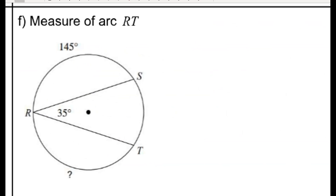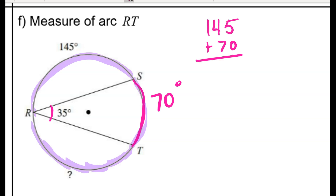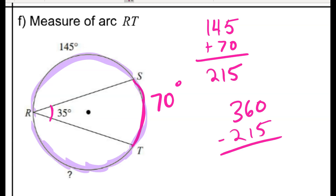For problem F, I have an inscribed angle of 35 degrees, so I double that to find the arc it intercepts — 70 degrees. I know arc RS, and I've now figured out arc ST. I'm missing arc RT. Since all arcs sum to 360 degrees, I add the arcs I have and subtract from 360 to find that arc RT is 145 degrees.